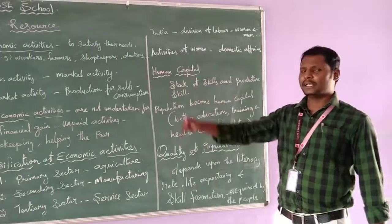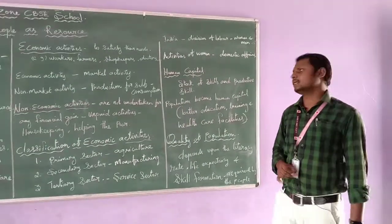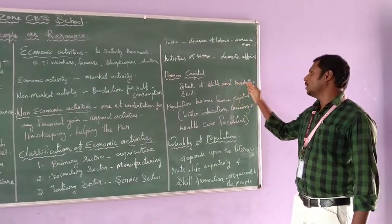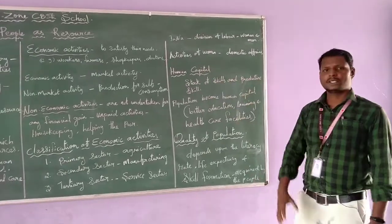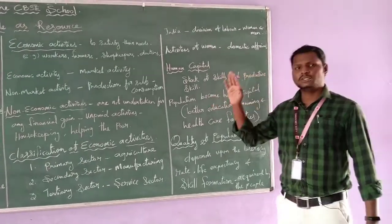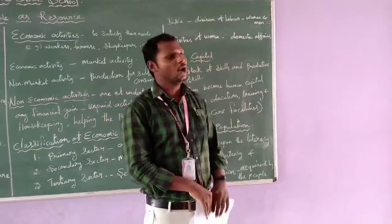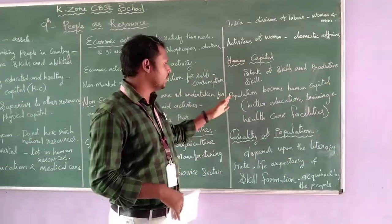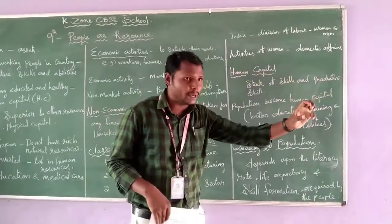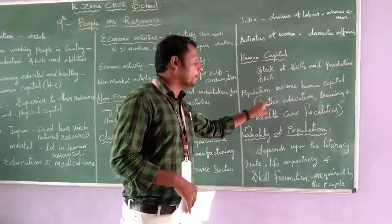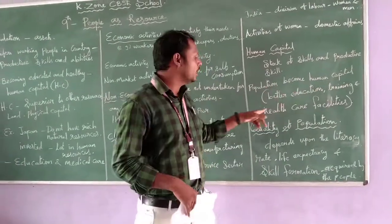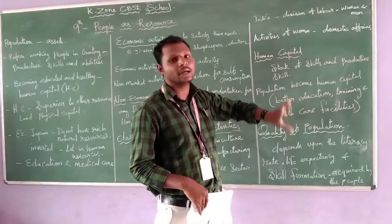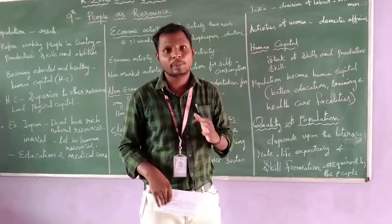The next topic is human capital. Human capital is the stock of skill and productive skill. This is called human capital. Population becomes human capital when they get better education, training, and healthcare facilities. When they acquire these three things, only then are they considered human capital.